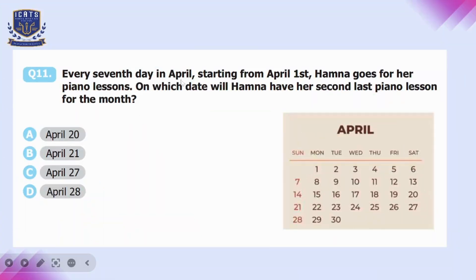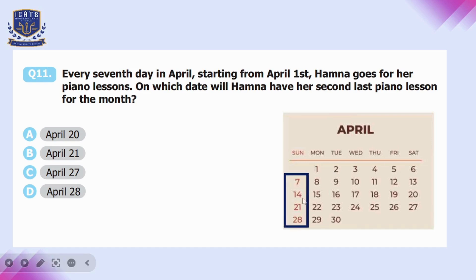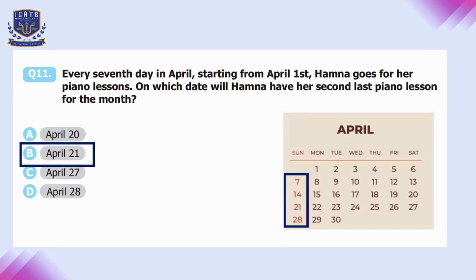Question number eleven: every seventh day in April, starting from April 1st, Hamna goes for piano lessons. The lesson dates are April 1, 7, 14, 21, and 28. The last lesson is on the 28th, so the second-last lesson is on the 21st of April. Option B is correct.